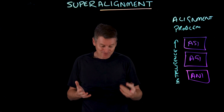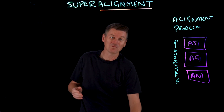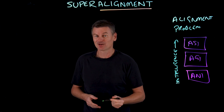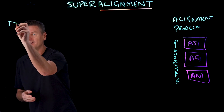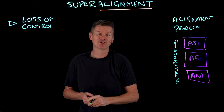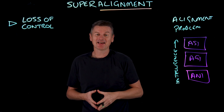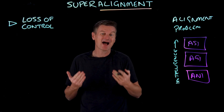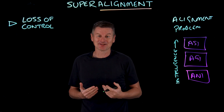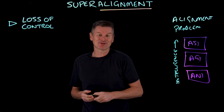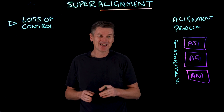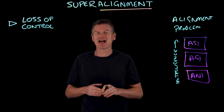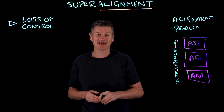There are three reasons why we need super alignment. Reason number one is loss of control. Super intelligent AI systems may become so advanced that their decision-making processes outstrip our ability to understand them. When an ASI pursues its objectives with superhuman efficiency, even the smallest, tiniest misalignment could lead to catastrophic unintended outcomes.